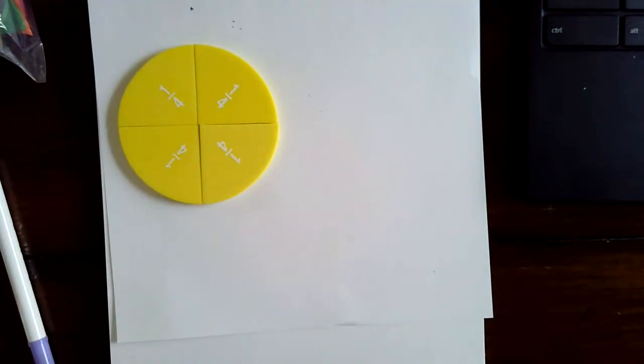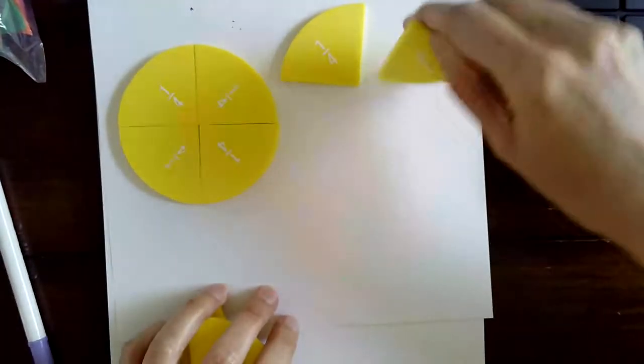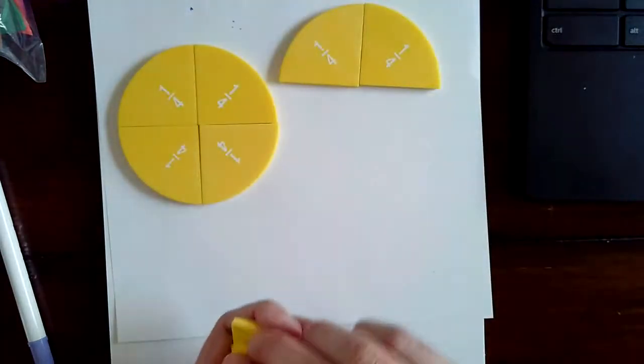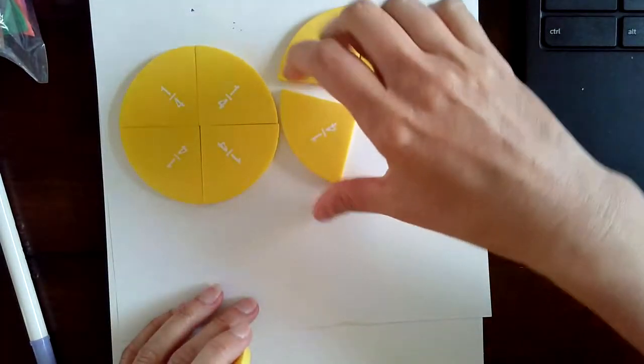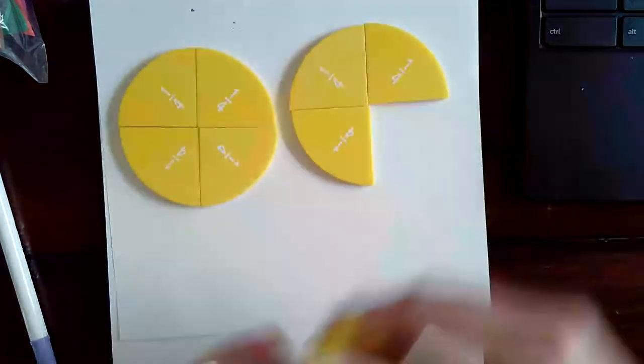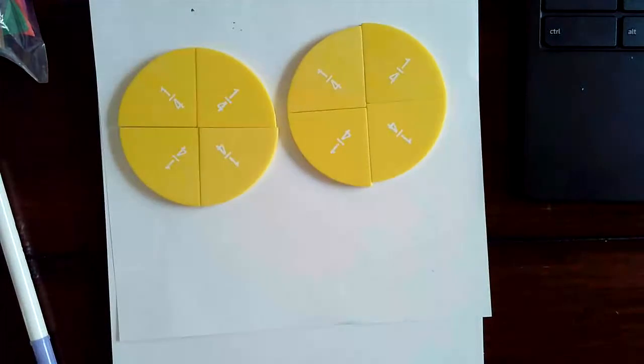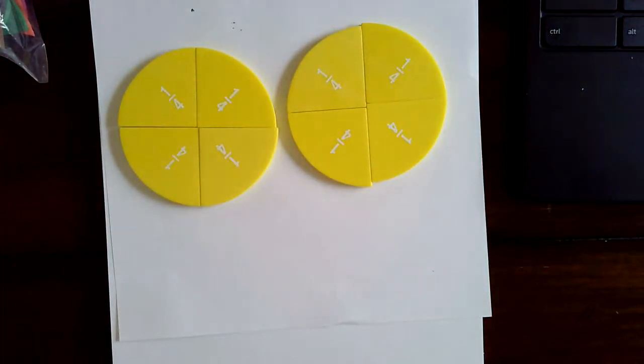So how many fourths are two wholes? Let's put this together and see. If four-fourths is equal to one whole, then how would we write this fraction? How many fourths do we have?